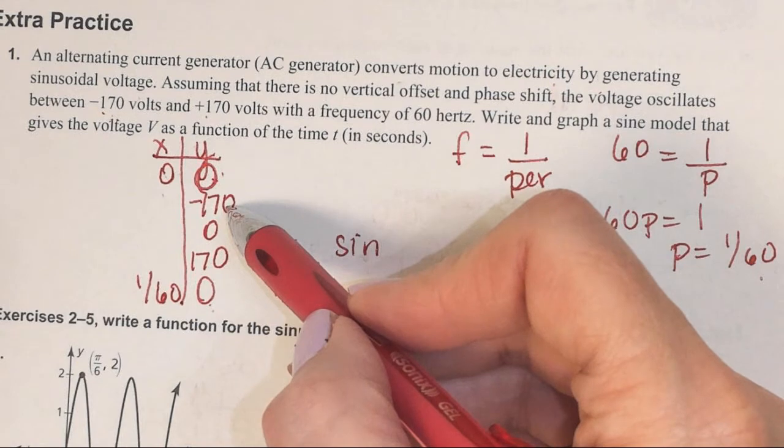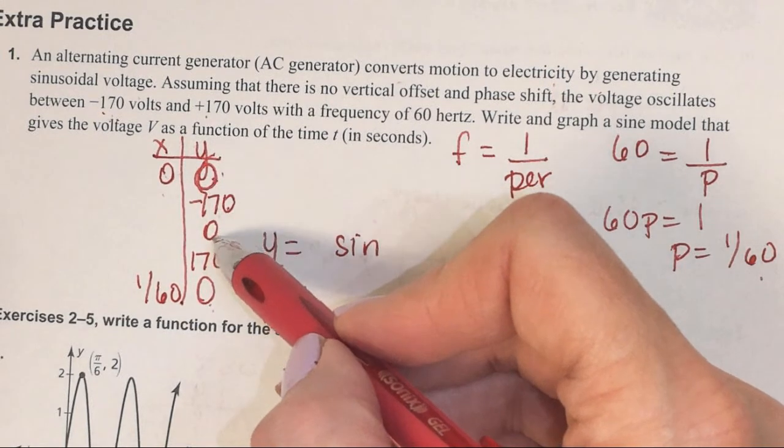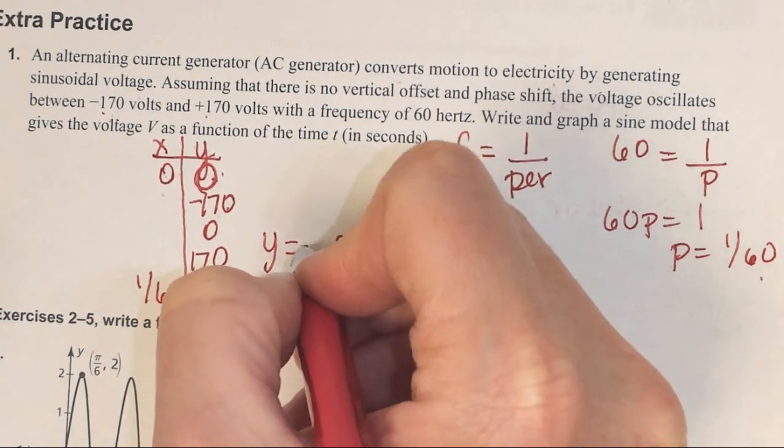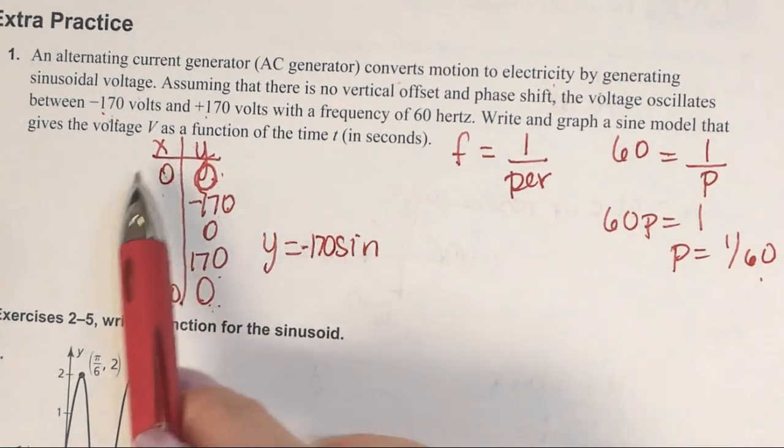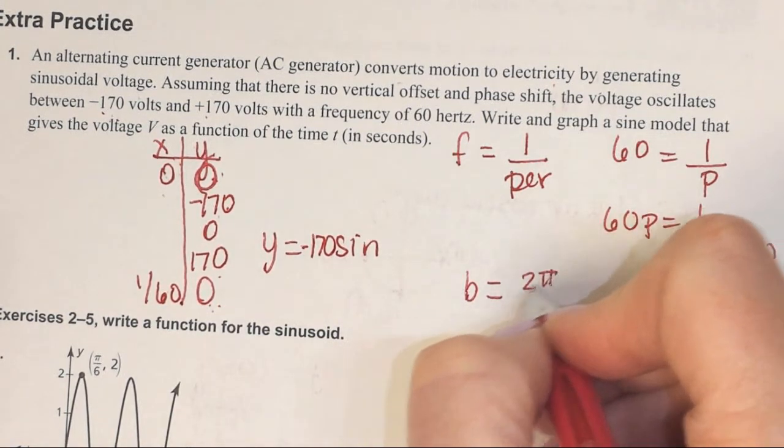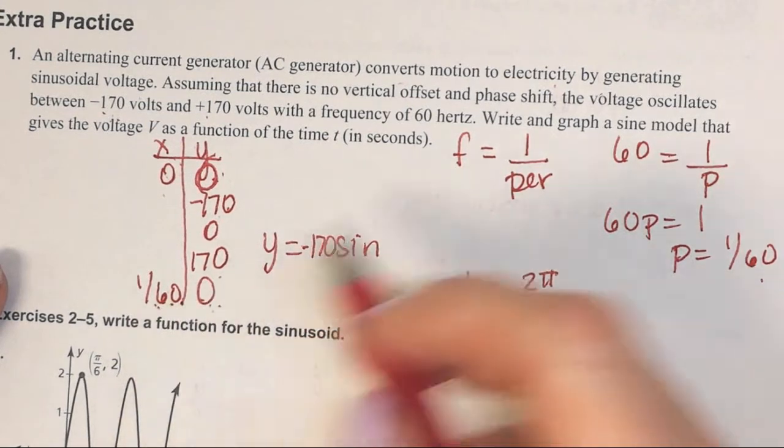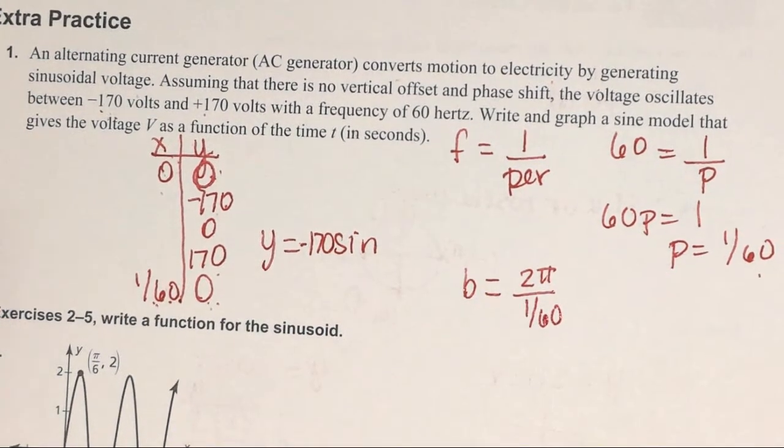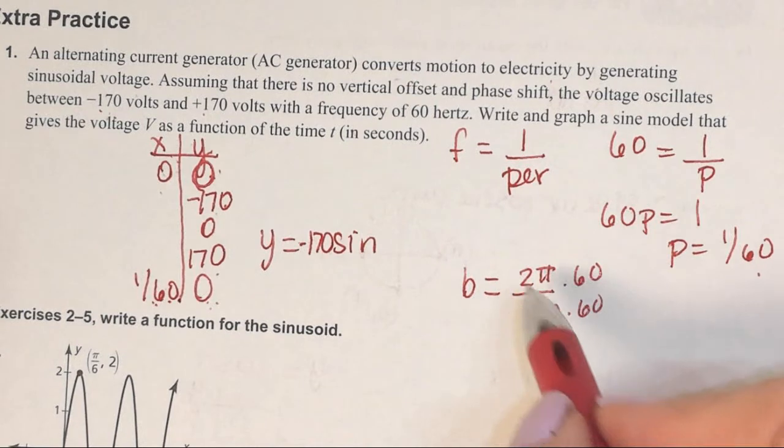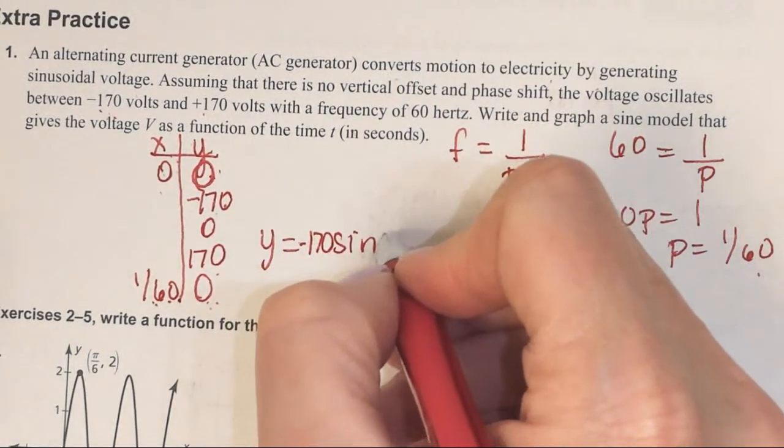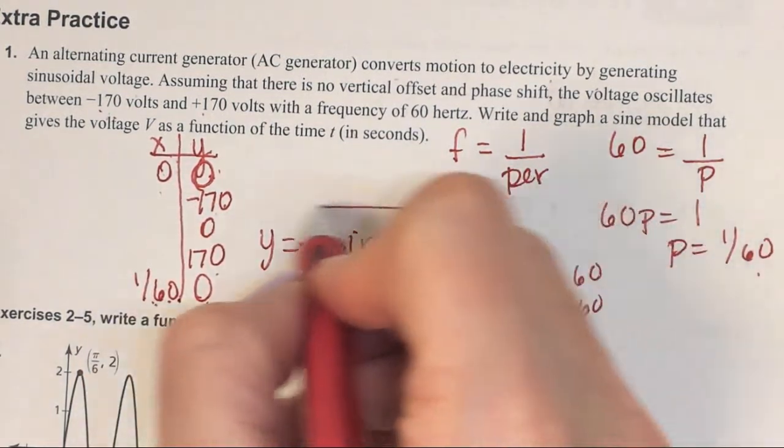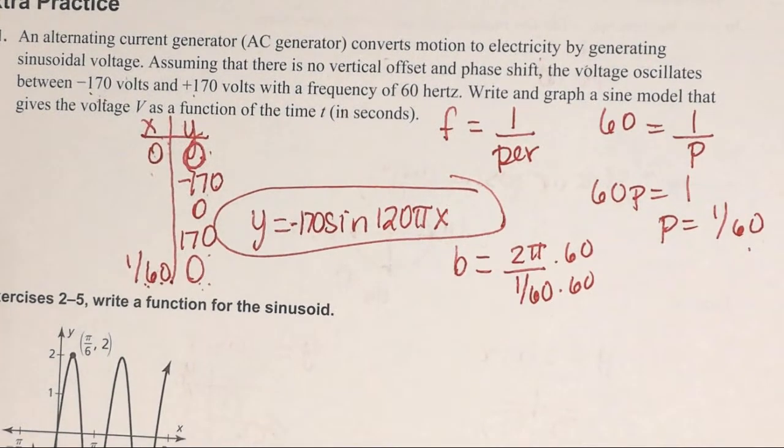It goes from 0 to -170. Sine is supposed to go 0, 1, 0, -1, 0. So we'll need -170 in front. The B value is 2π divided by the period. The period is 1/60. So 2π divided by 1/60 equals 120π. The equation is y = -170sin(120πx).